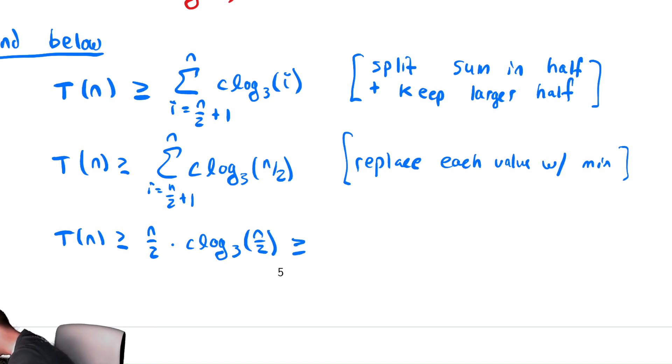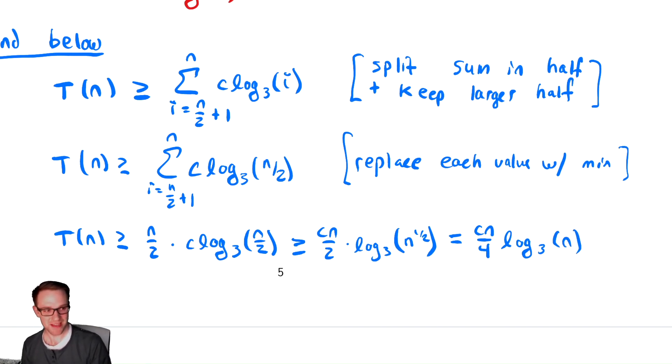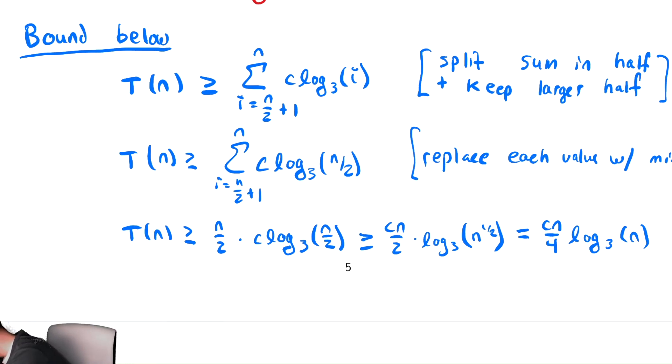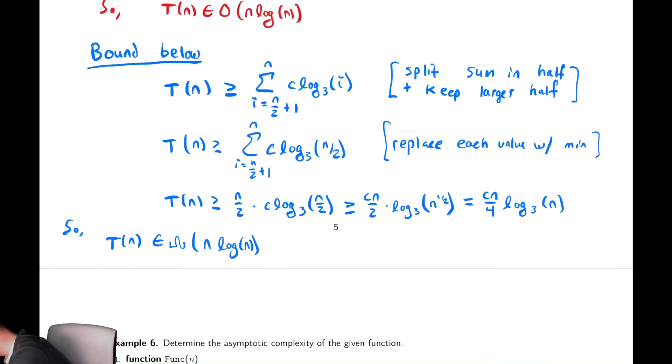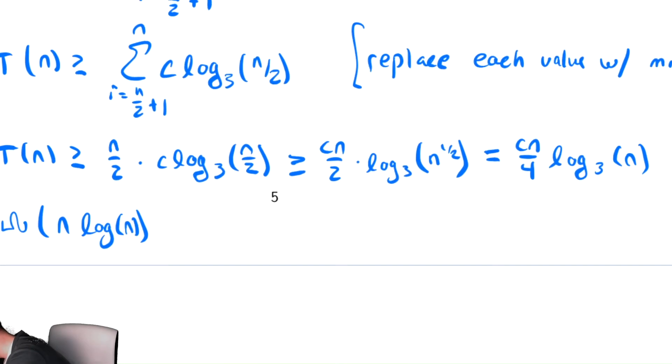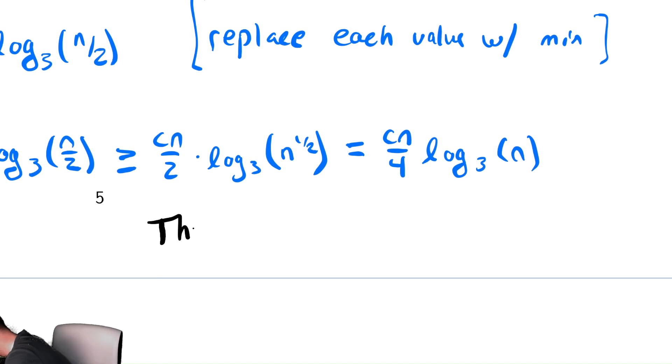We can replace that n divided by 2 with radical n. So we have Cn over 2 times log base 3 of n to the 1 half. And then we can bring the 1 half out front and write that as Cn over 4 times log base 3 of n. So T of n is in big omega of n log n, which is good because it was in big O of that. Thus it's in big O and big omega of the same thing. So it's in theta of that thing. Thus, T of n is in theta of n log n.